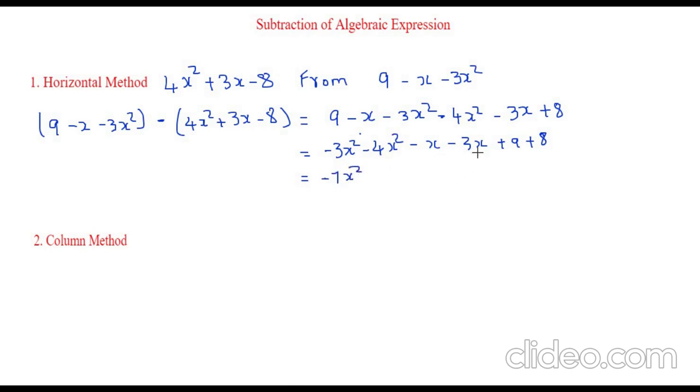And again same signs have to be added. Since there is no number before x, it will be considered as 1. Minus 1 minus 3 will become minus 4x. And now we have plus 8 and plus 9. So we will add the same sign, which gives us 17.